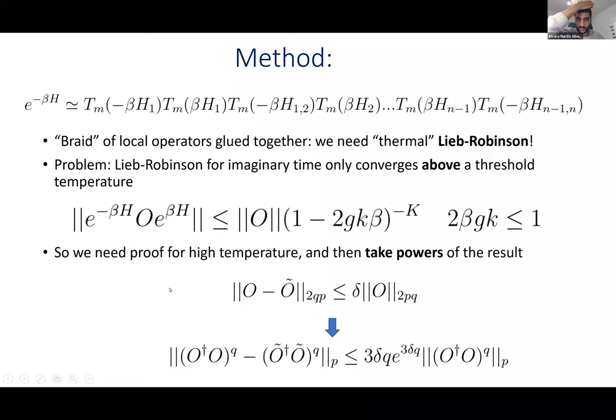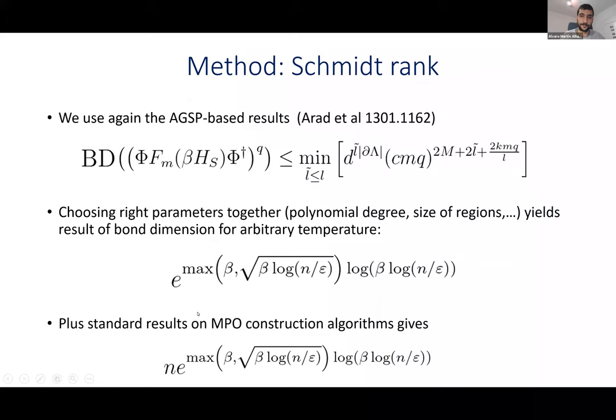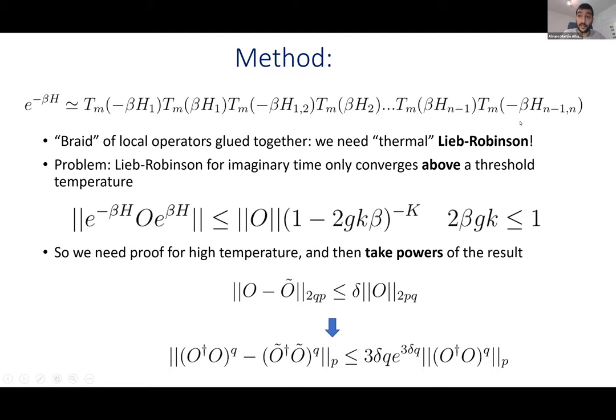The method to show this braiding works uses something called the thermal Lieb-Robinson bound. The fact that this approximates the thermal state has to do with locality via the Lieb-Robinson bound. There's a problem: the imaginary-time Lieb-Robinson bound only converges above a threshold temperature, so it only works for β not too large. The solution is the same as before: you do this chain of operators approximating your thermal state at small β, then take powers to increase β, controlling the bond dimension as you do so.